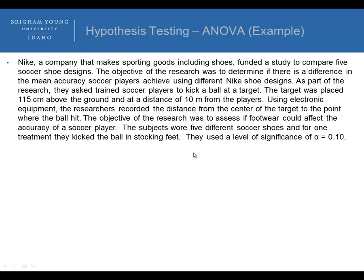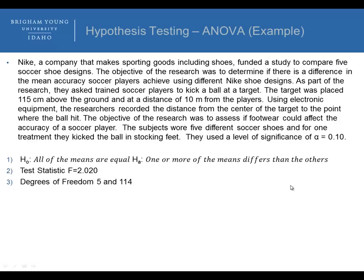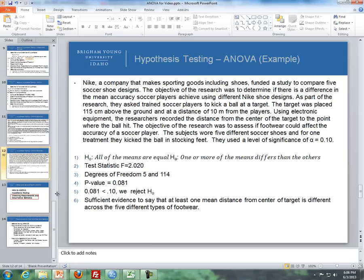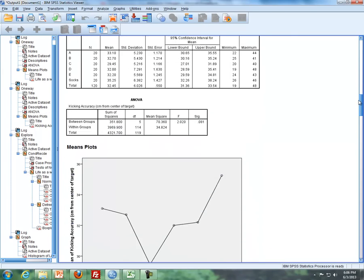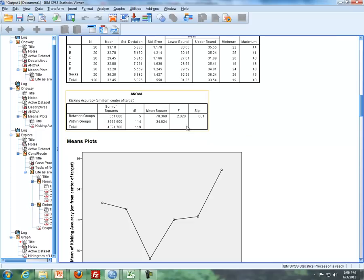Okay, so here are the six steps. First is to state the null and alternative hypothesis. The null hypothesis is that all the means are equal, and the alternative is one or more of the means differ than the others. Steps two, three, and four we get from our output from either Excel or SPSS. Step two is our test statistic, the degrees of freedom is step three, and step four is our p-value. Where I get those results, I got it from my SPSS; you'll find similar output in Excel.